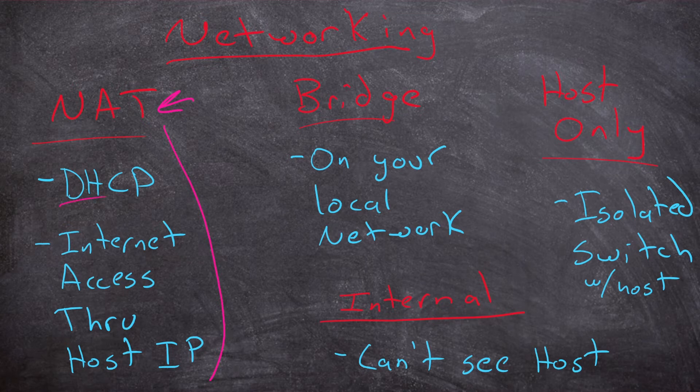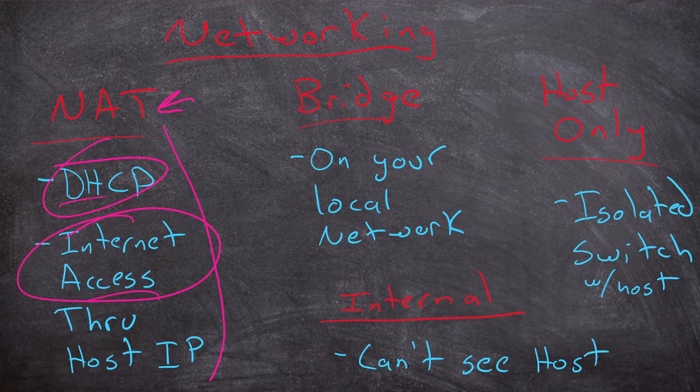NAT has its own internal DHCP server on your host, so you get your own network address for every VM connected to NAT. It gets you internet access because it allows you to go through your host machine's connection to the internet, and that gets you an IP address that will allow you to access the internet.